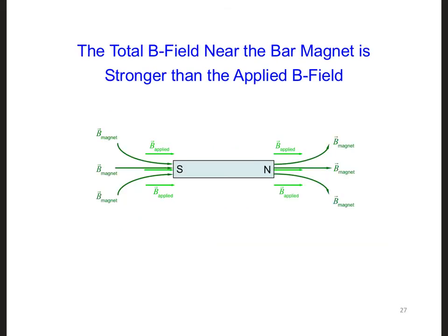After the alignment, the total B field in the vicinity of the bar magnet is stronger than the applied B field, just as we had for the current loop also.